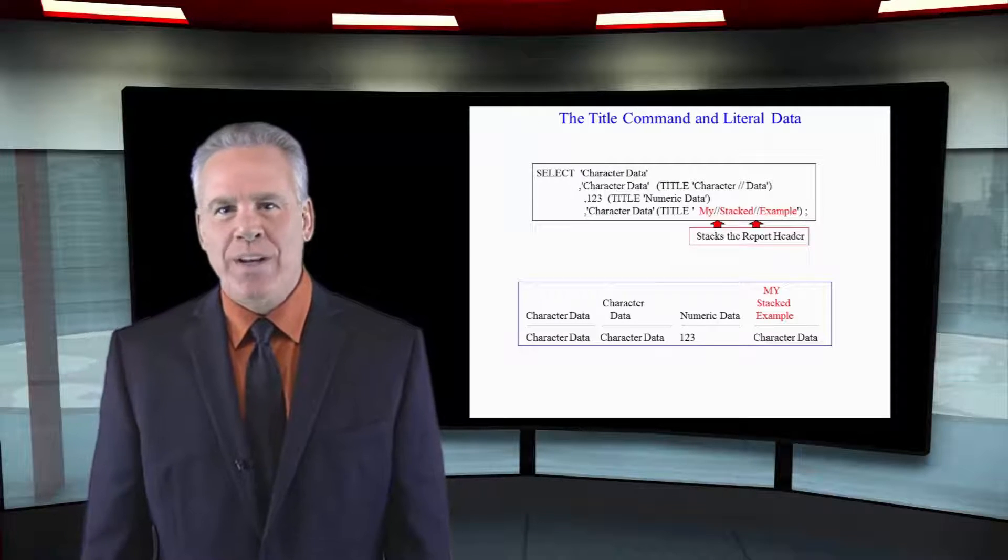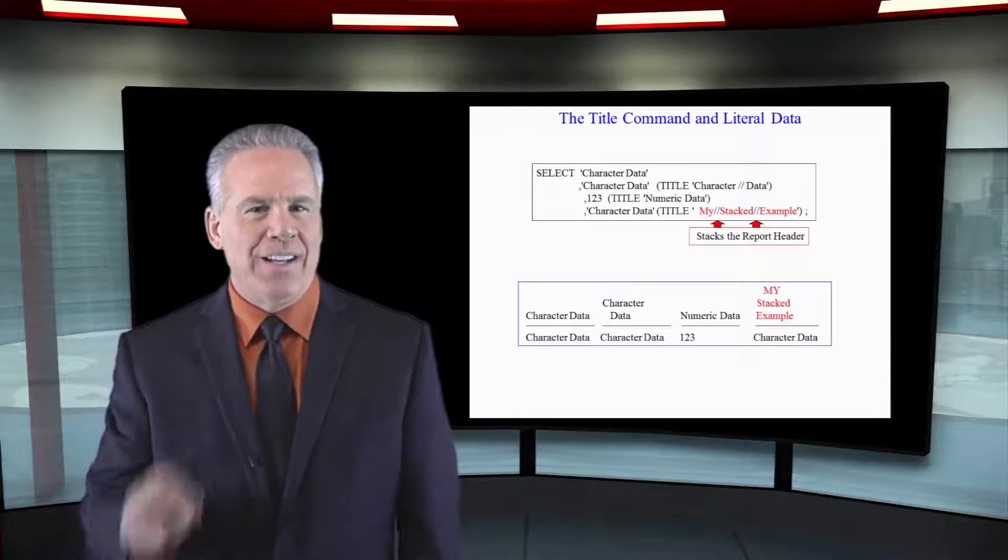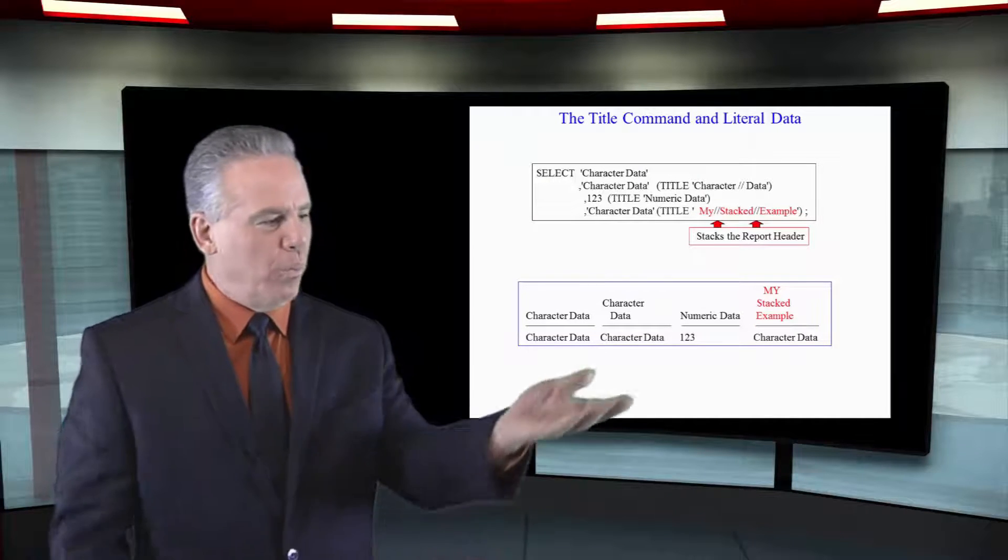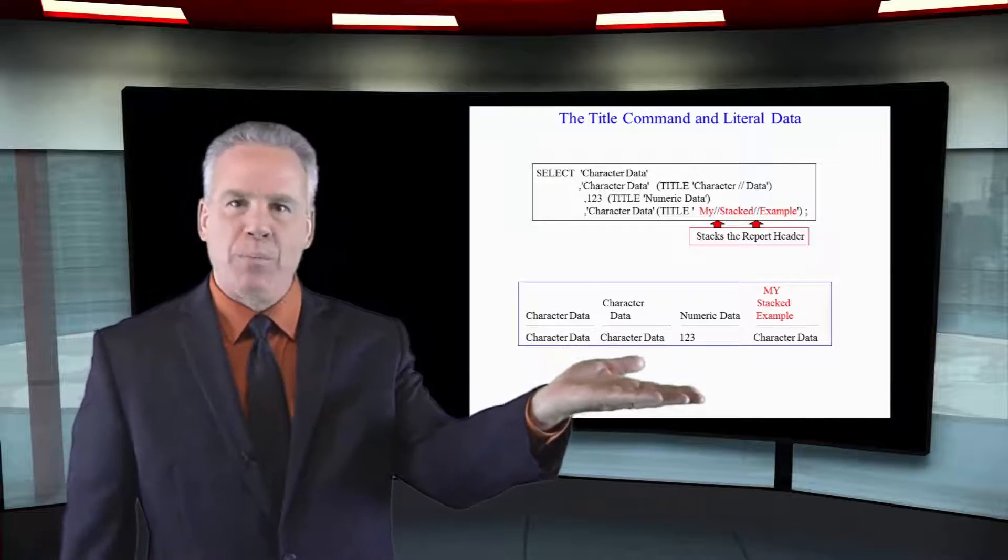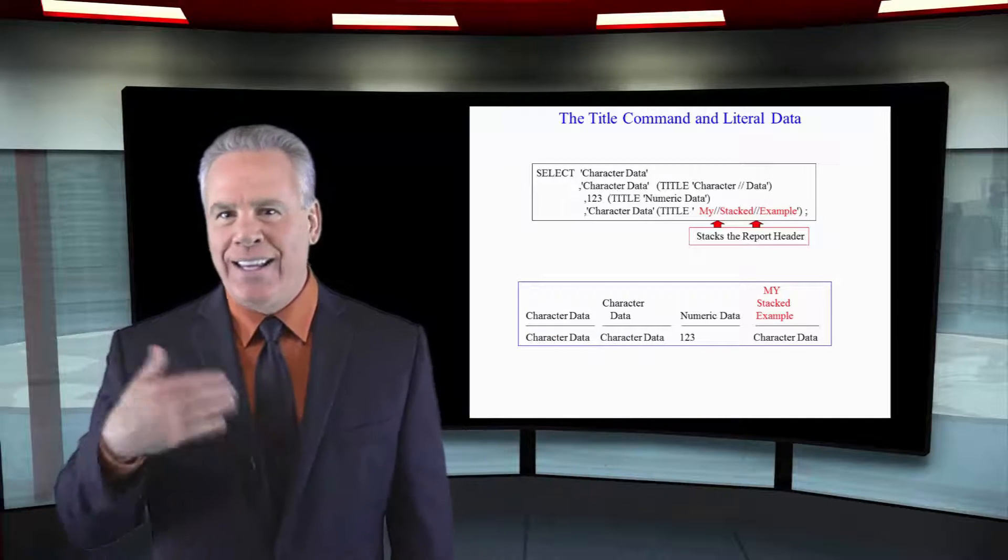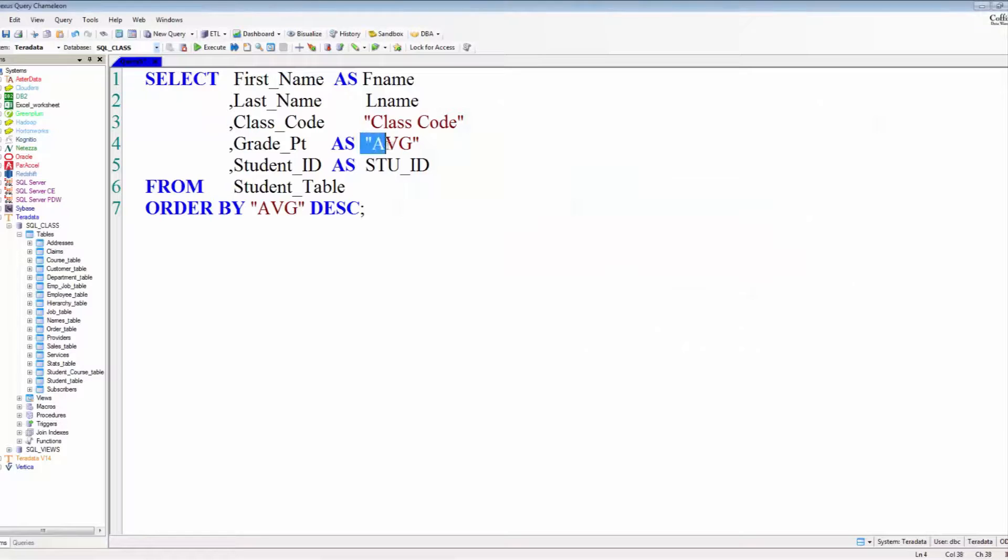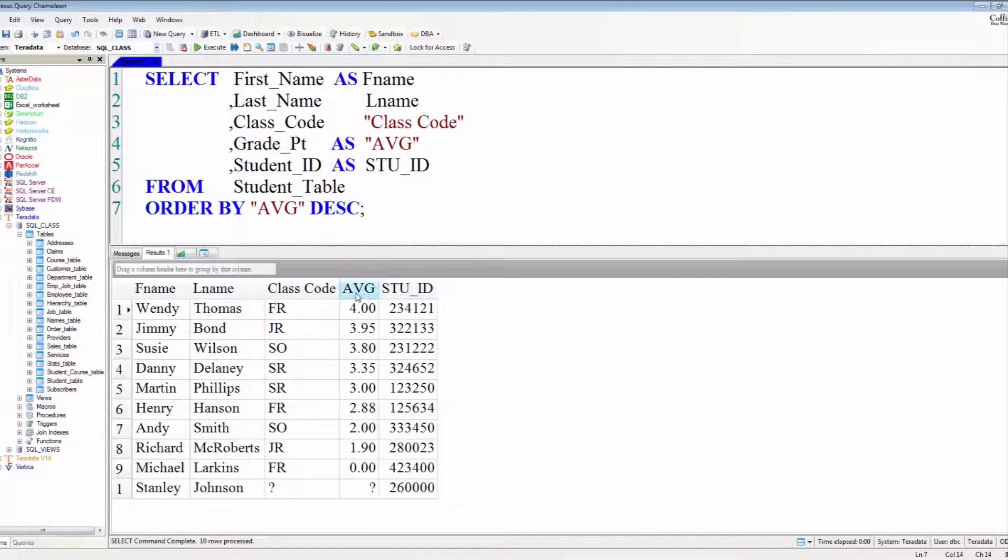What's the difference between an alias and a TITLE command? A TITLE command will put a new title on the report for the column header, but you can't use it again like in the sort by. But an alias will be the new report header, and you can use it again in the SQL later on, for example in the ORDER BY statement or in the sort key.